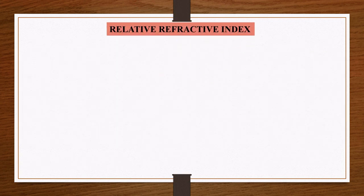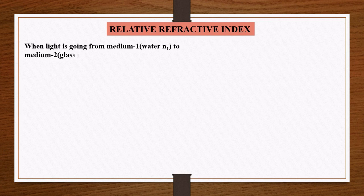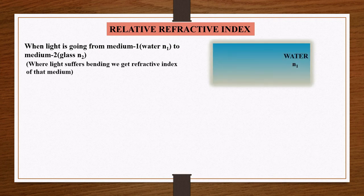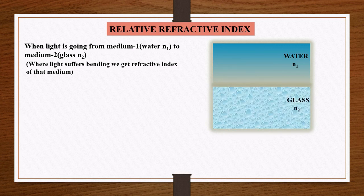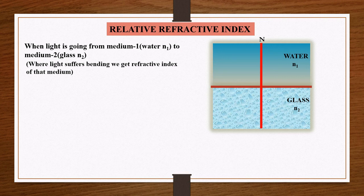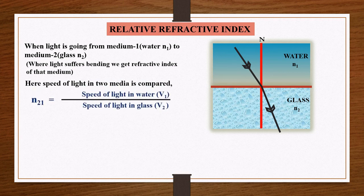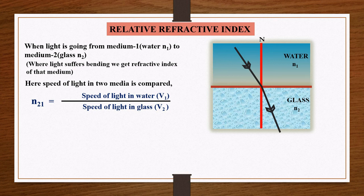Let us see what is relative refractive index. When light is going from medium 1, which is water, to medium 2, which is glass — consider water as medium 1 with refractive index n1, and glass as medium 2 with refractive index n2 — these two media are separated by a boundary line with N as the normal. When light goes from water to glass it suffers refraction, and here the speed of light in two media is compared.